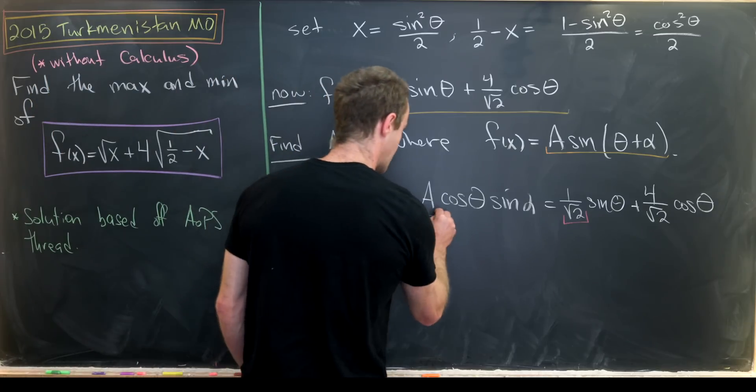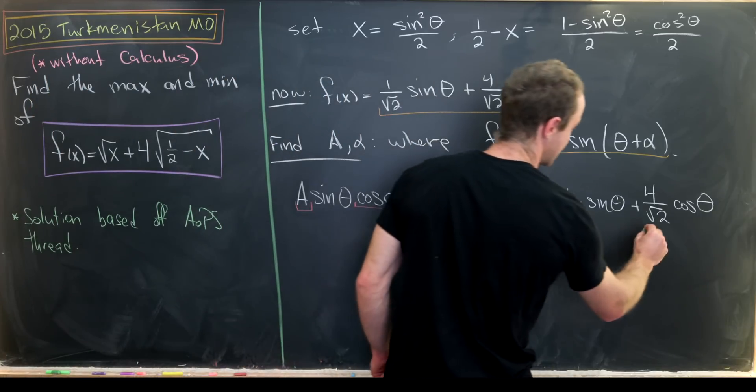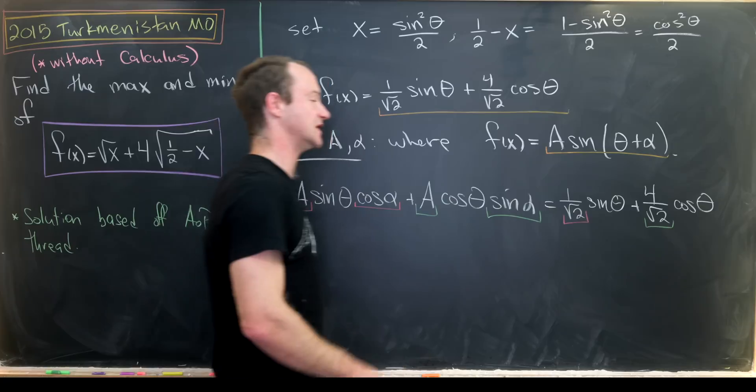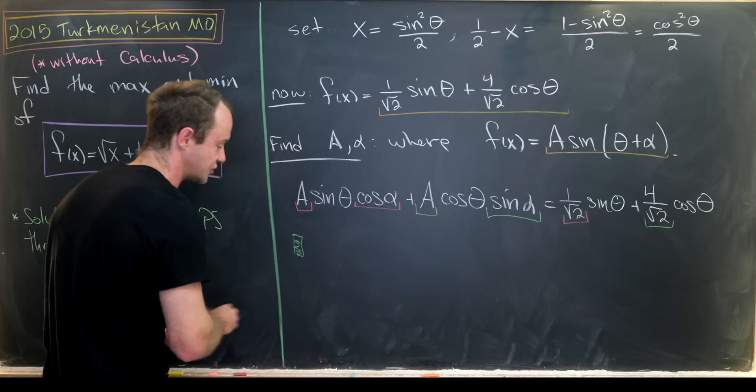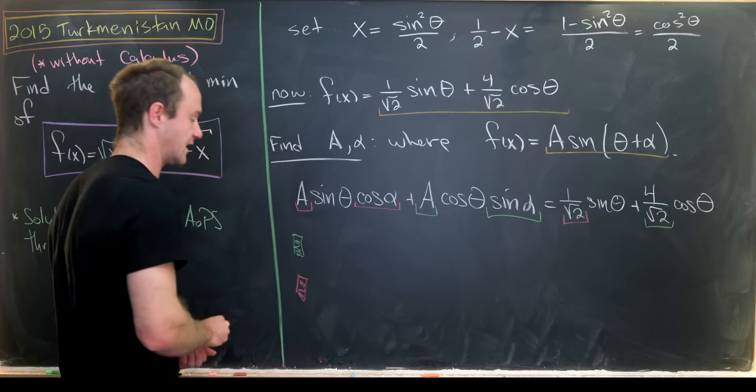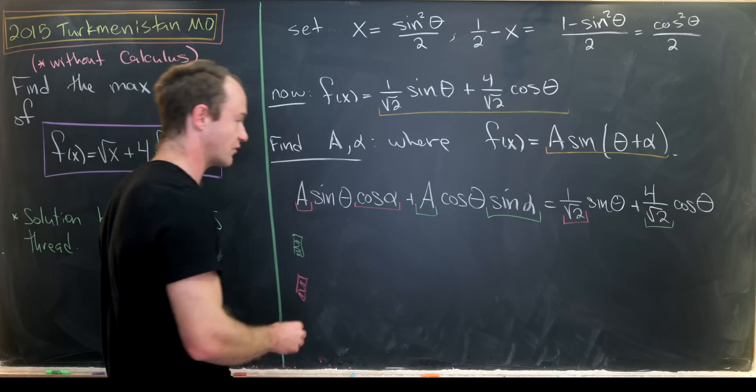And furthermore, we can set the coefficient of cosine of theta on each side of this equation equal to each other. So that gives us the green underlined equation as well as the red underlined equation.